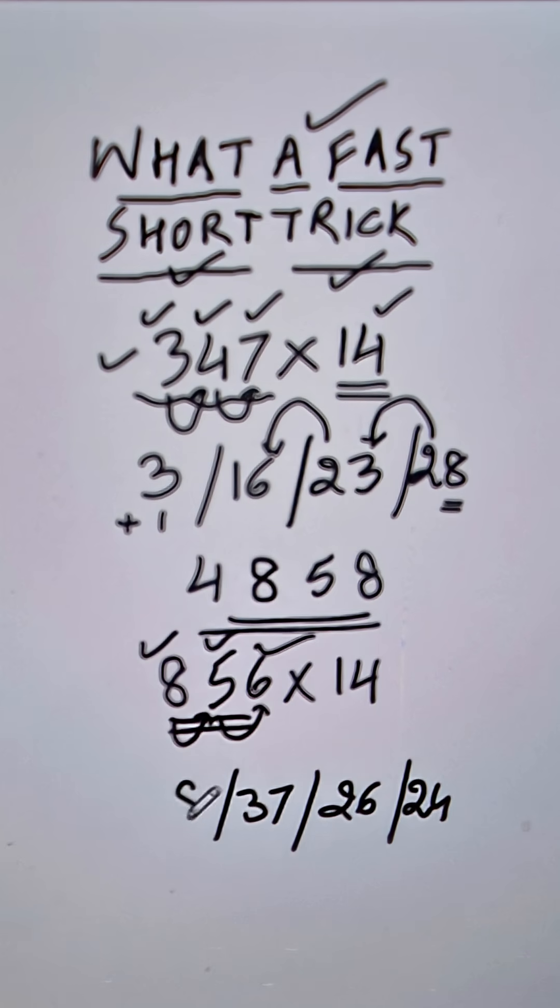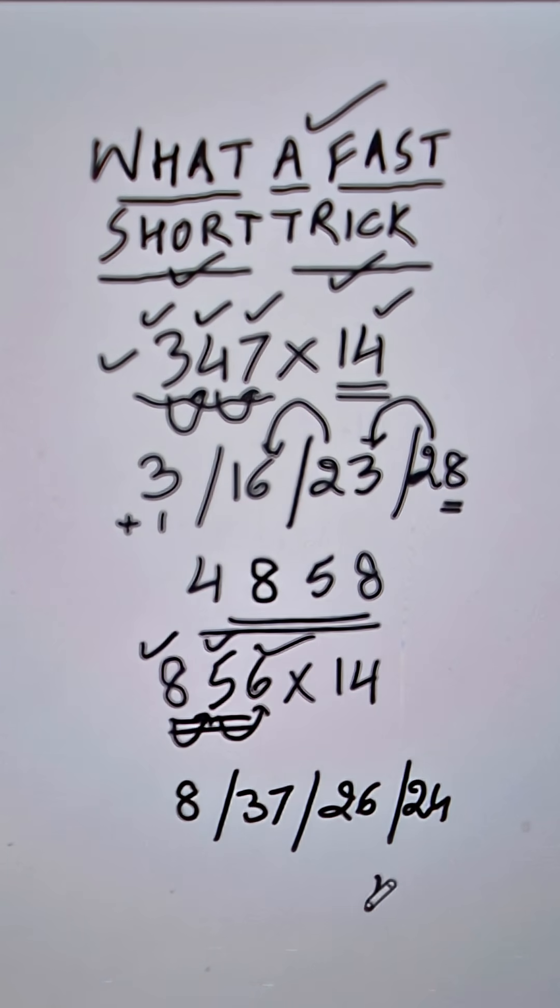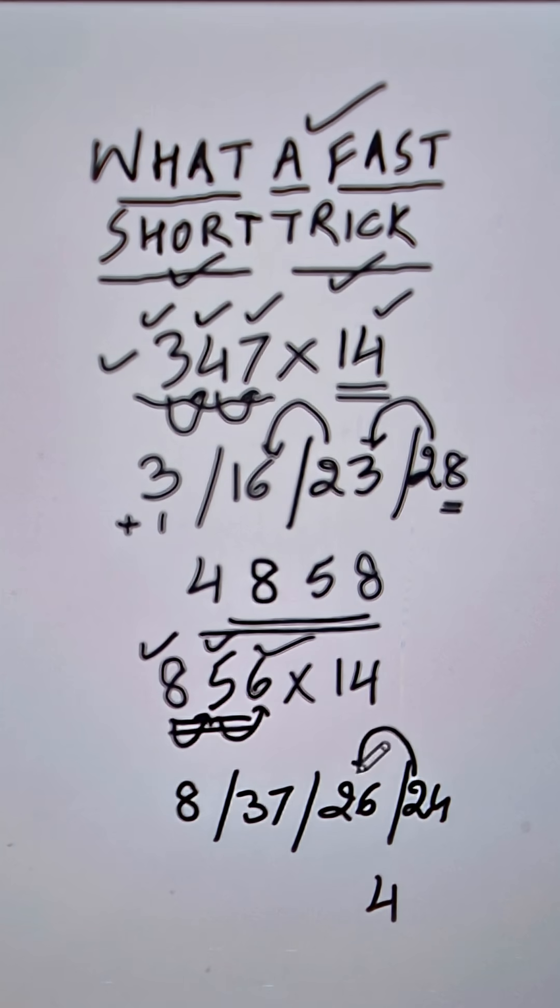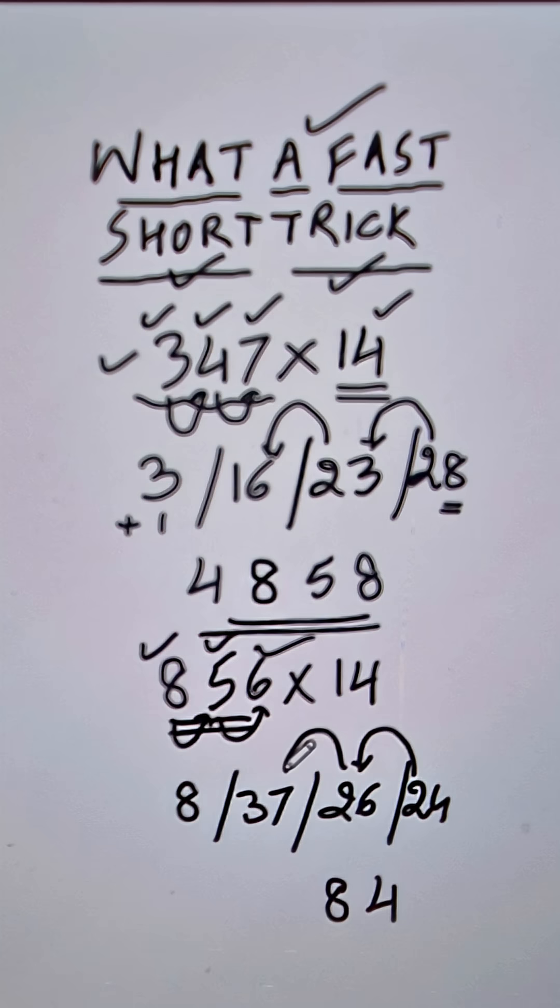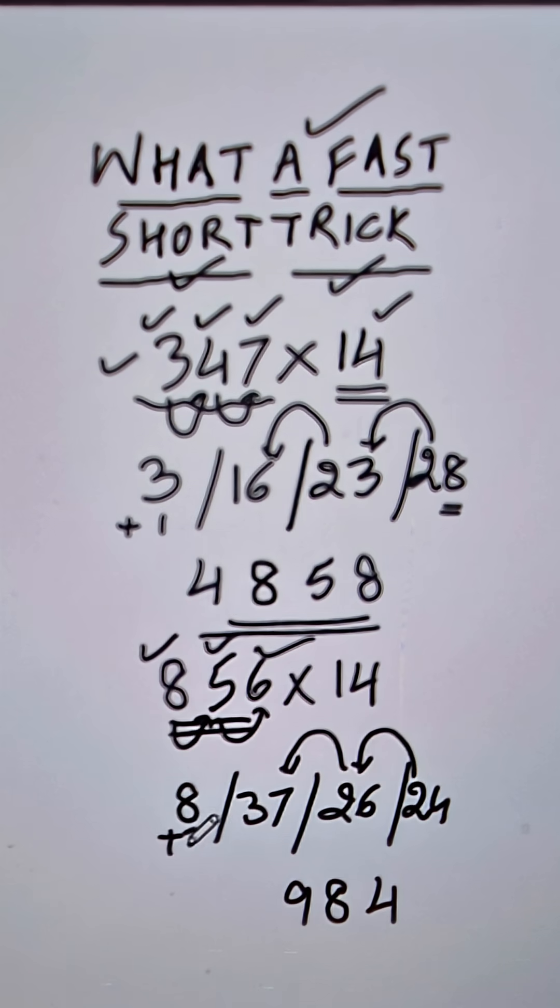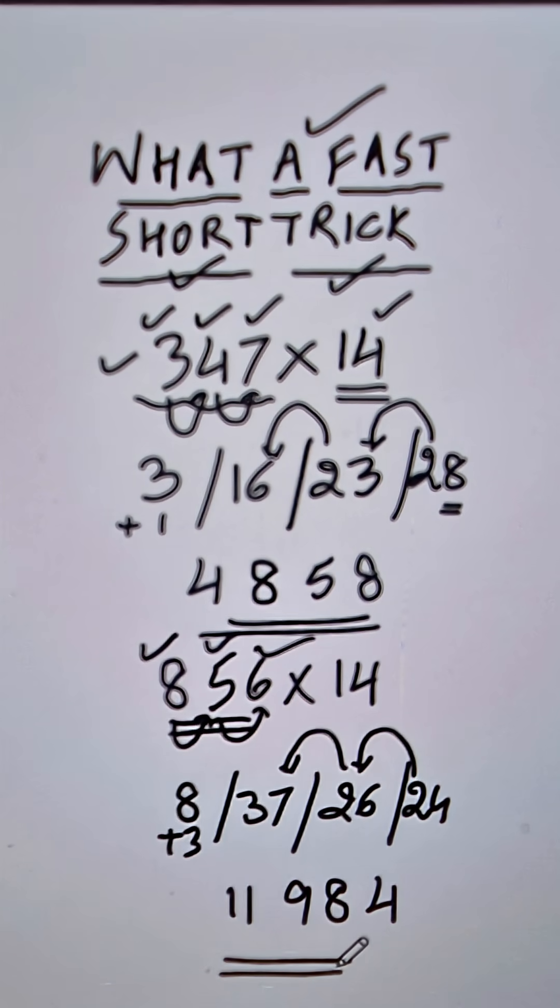And finally you have the 8. Now start writing again from the unit digit 4, 2 carried, so 28 means 8, 2 carried, so 37 means 39, so 9 plus 3 here, so this becomes 11. And now you can tell me in the comments, does it work?